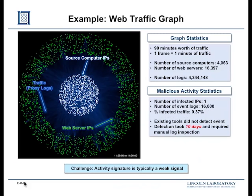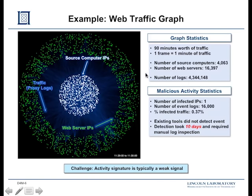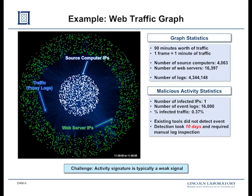Here's an example dataset: a graph of web traffic. These are the source IPs — computers on the inside of some domain — and the destination IPs, the green web servers. This is sometimes referred to in graph theory as a bipartite graph: two separate sets of vertices that talk to each other. The faint blue lines show which computers are connecting to which web servers. This shows 90 minutes of data, and there was actually a malicious activity that we were looking to detect.